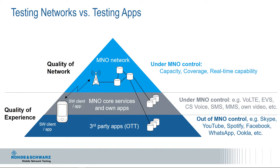The upper part of the triangle is quality of the network; the lower part is quality of experience — how applications are performing over the mobile network. All the tests, whether network tests or application tests, have a geographical dimension. They are executed in the context of a drive or a walk test. Let us discuss these three levels with a practical example: video services, or how to measure the quality of video services.